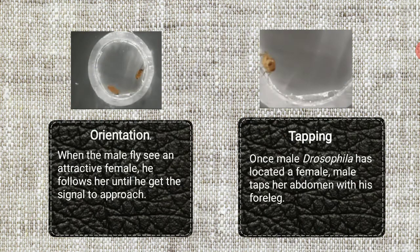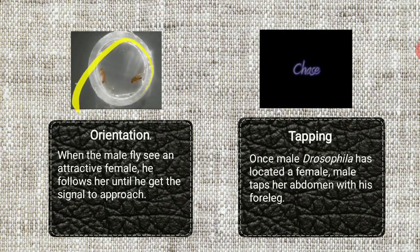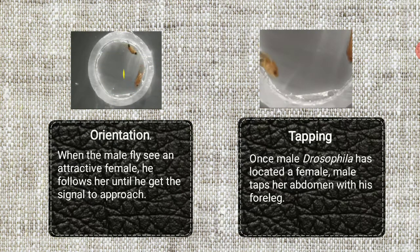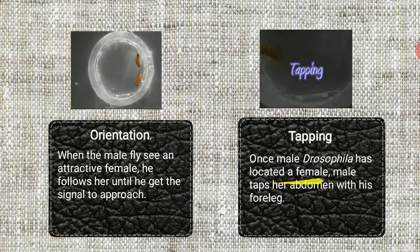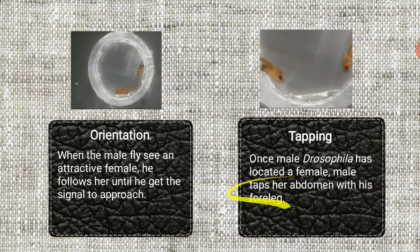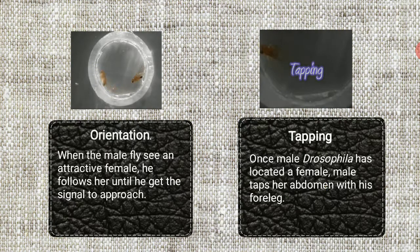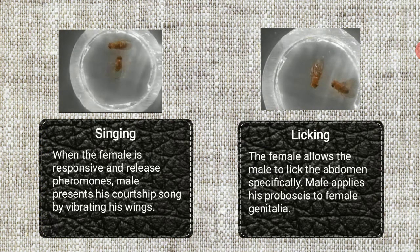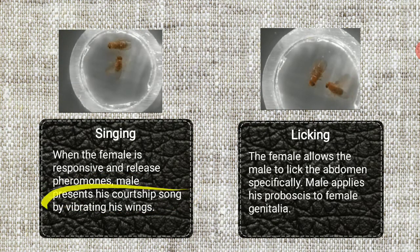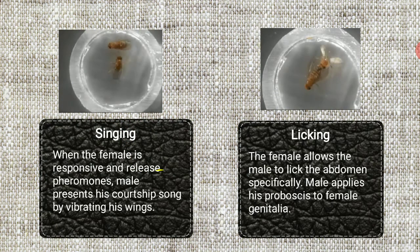First one is orientation. When a male fly sees an attractive female, he follows her until he gets the signal to approach. Here we observe how the male tries to get a signal from the female to approach. Second one is tapping. After the orientation process, once the male Drosophila has located a female, the male taps the abdomen with his forelegs. Here we observe how the male taps the abdomen of the female. Next is the singing step — when the female is responsive and releases pheromones, the male presents his courtship song by vibrating his wings. By vibrating the wings, it produces a sound by which the female gets attracted.